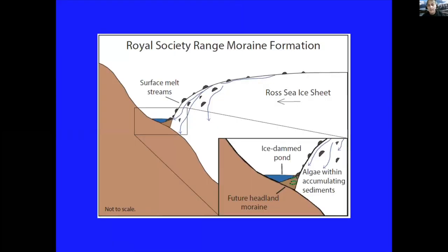Unlike many moraines in Antarctica, these formed in standing water bodies adjacent to the ice sheet. The ice sheet advanced onto land here and, because of the topography against the headlands, it dammed up ponds and streams against its margin. Sediments melted out of the ice sheet and formed sediment wedges and deposits in these ponds, which later became the headland moraine. In these ponds, there were lacustrine algae and cyanobacterial mats that colonized the surface of these moraines as they were forming and were periodically buried as more material melted out of the ice, leaving layers of algal mats within the moraines that date their construction. Radiocarbon dating can be used to get the age of moraine construction from them.